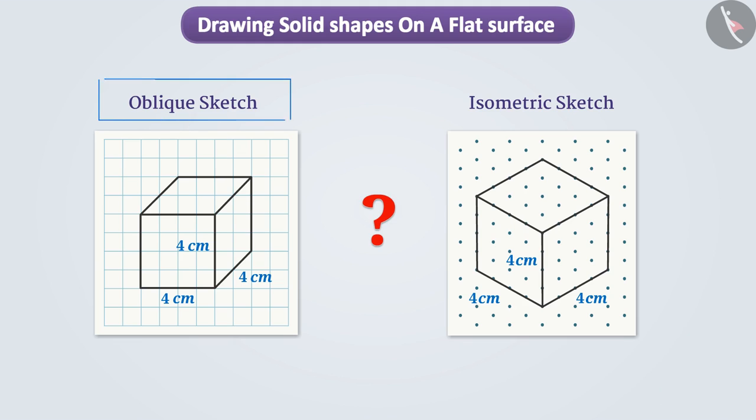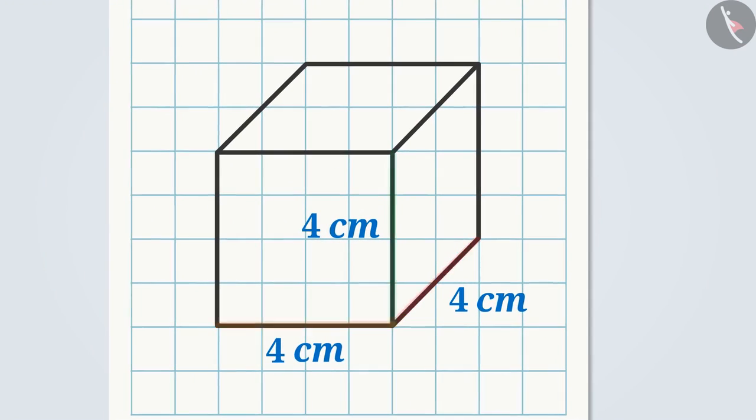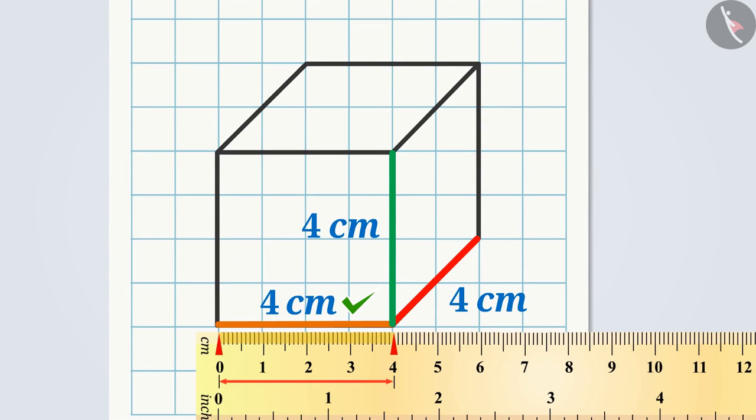Exactly. The length of sides drawn in the three-dimensional shape by the technique of oblique sketch are not in same proportion. But we still know important information about the solid shape. As here all the three edges seem equal but in reality their lengths are not in same proportion.